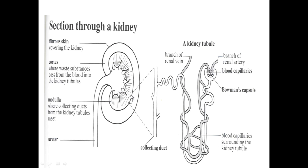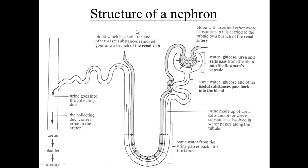If we take an even closer look, you've got a single kidney tubule. A kidney tubule, or one tubule, is actually known as a nephron. Here you've got the structure of a nephron. This is the collecting duct, and this leads towards the ureter and the bladder.